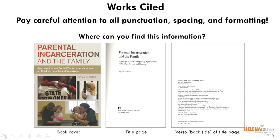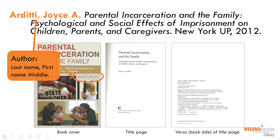Let's look at the basic citation for a book. Remember to pay careful attention to all punctuation, spacing, and formatting. The first part of a citation is the author's last name, followed by their first name and middle name or initials, and a period. Refer to the cover or title page to find the author's name.